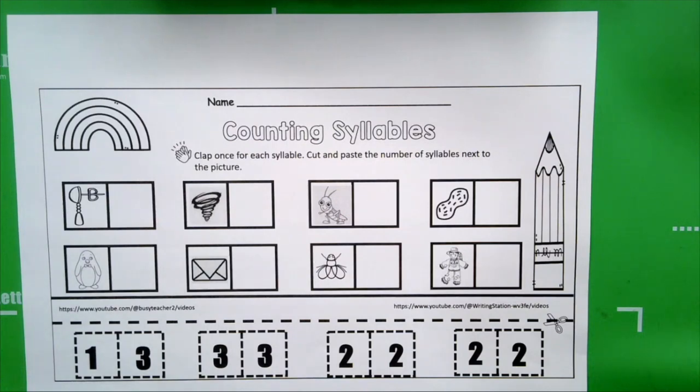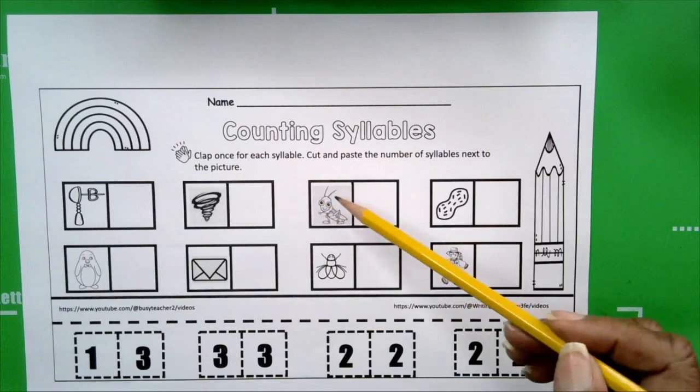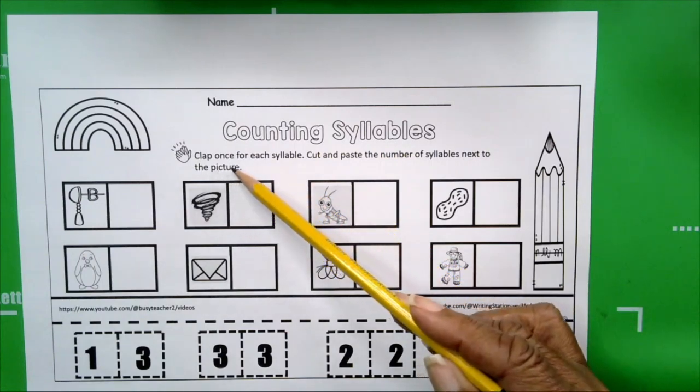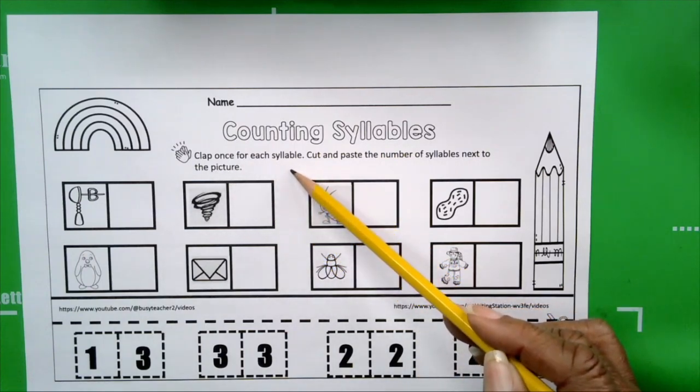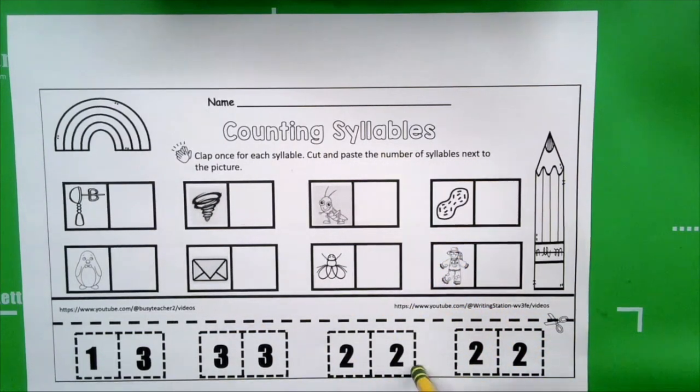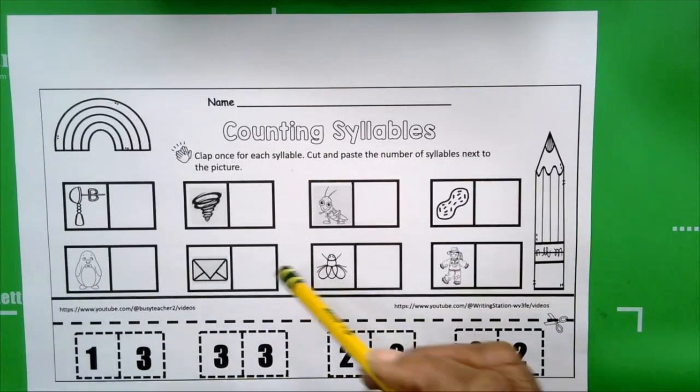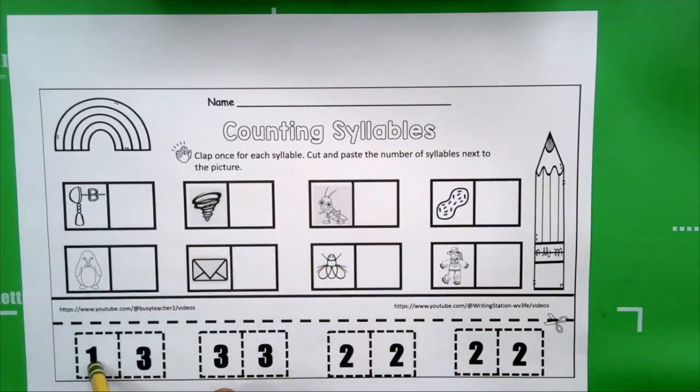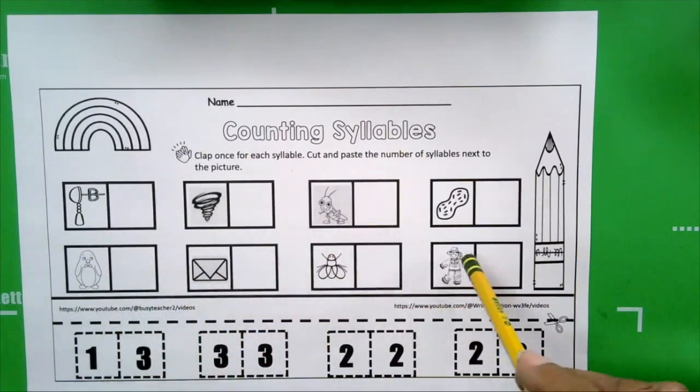Take a look at your paper. I'm going to read the directions. It says clap once for each syllable. Cut and paste the number of syllables next to each picture. These are our numbers that tell us how many syllables are in each picture or word.